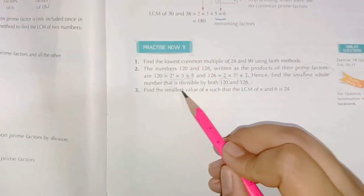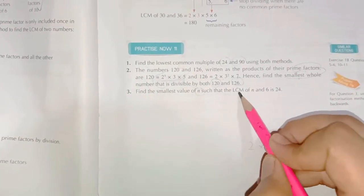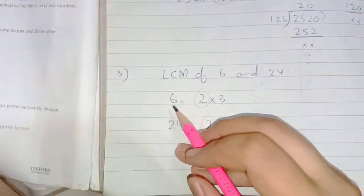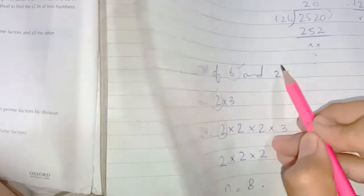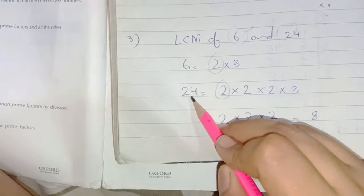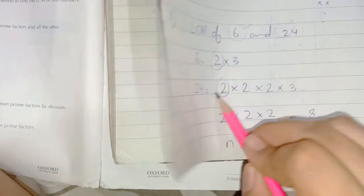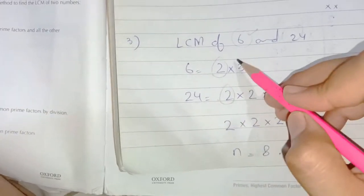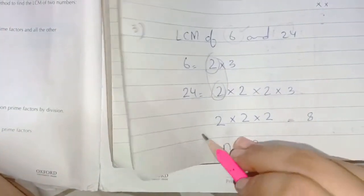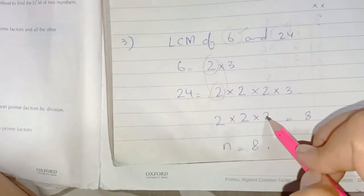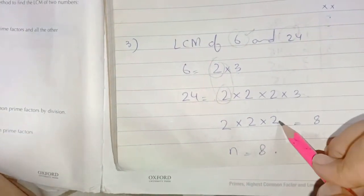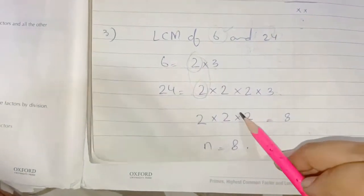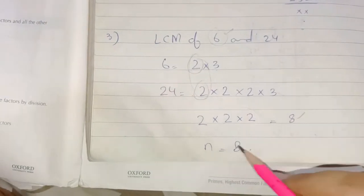Number 3: find the smallest value of n such that the LCM of n and 6 is 24. We write the factors of 6 — 2 × 3 = 6 — and the factors of 24 — 2 × 2 × 2 × 3 = 24. The common number between 6 and 24 is 2, with remaining factors 2 and 2. To find the smallest value of n, we take 2 as the common and the remaining 2, so the answer is 2 × 2 × 2 = 8. Therefore n = 8.